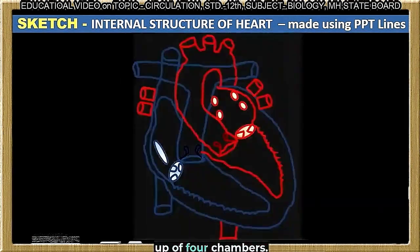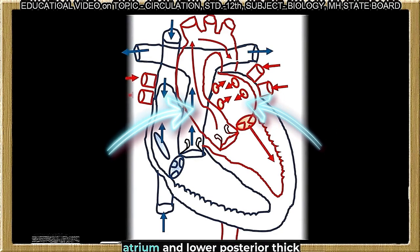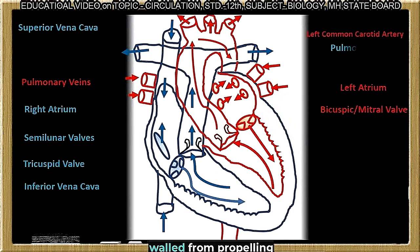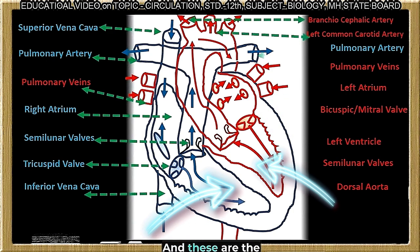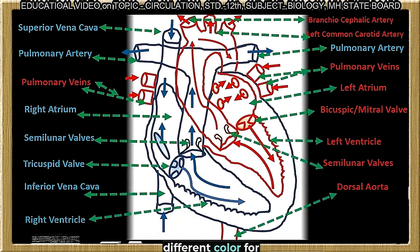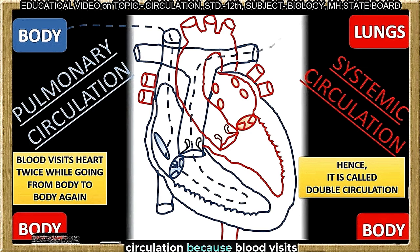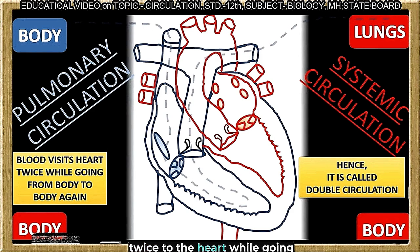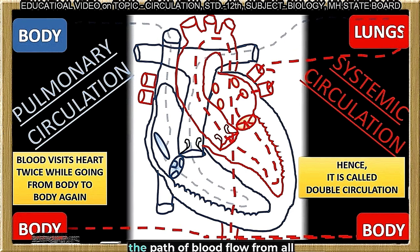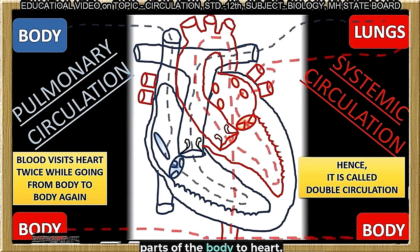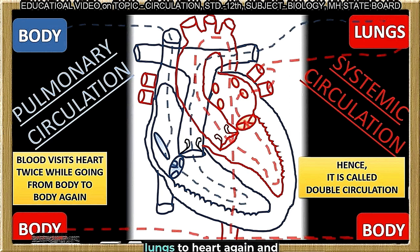The heart is made up of four chambers: two anterior thin-walled receiver chambers called atria, and two lower posterior thick-walled propelling chambers called ventricles. Now remember that human circulation is called double circulation because blood visits the heart twice while going from the body and back to the body. Observe the path of blood flow from all parts of the body to the heart, then to the lungs shown in blue dotted lines, and then back from lungs to heart and heart to body — so blood visits twice, hence the name double circulation.